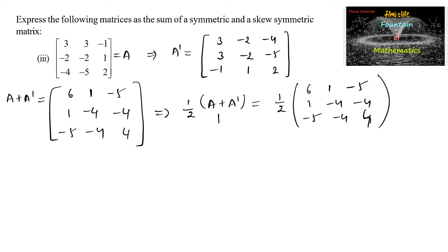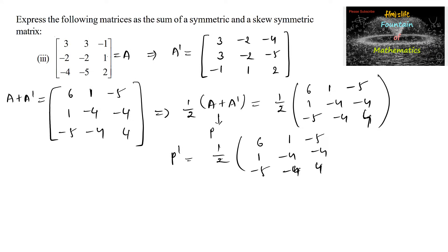Let us call this P. Then P transpose, interchanging rows and columns, gives 1/2 times of [6,1,-5; 1,-4,-4; -5,-4,4], which is the same as P. So P is a symmetric matrix.